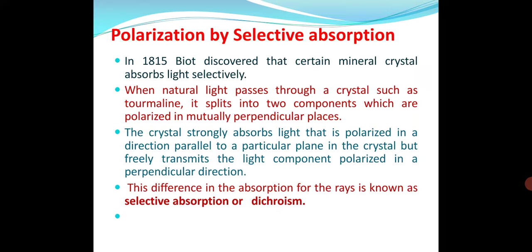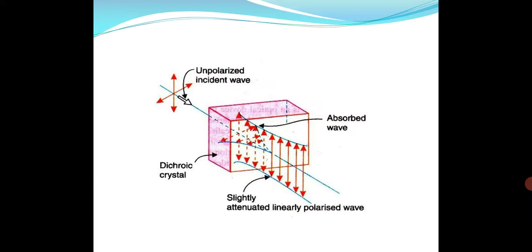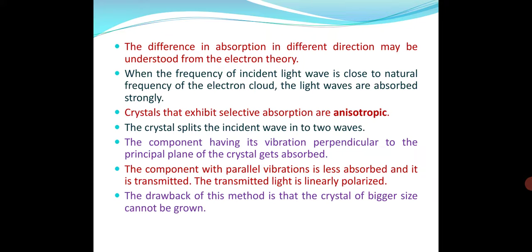Polarization by selective absorption. Scientists discovered that certain mineral crystals absorb light selectively. When we allow unpolarized light on a dichroic crystal, the incident light has two planes of polarization. One of the planes of polarization is absorbed, and at the output we get slightly attenuated but linearly polarized light. This type of crystal exhibits selective absorption — that is, it is anisotropic.